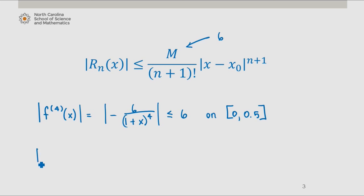According to the theorem then, since we were interested in the error associated with the third degree Taylor polynomial, this error is bounded above by 6 over 4 factorial times x minus 0 to the fourth.